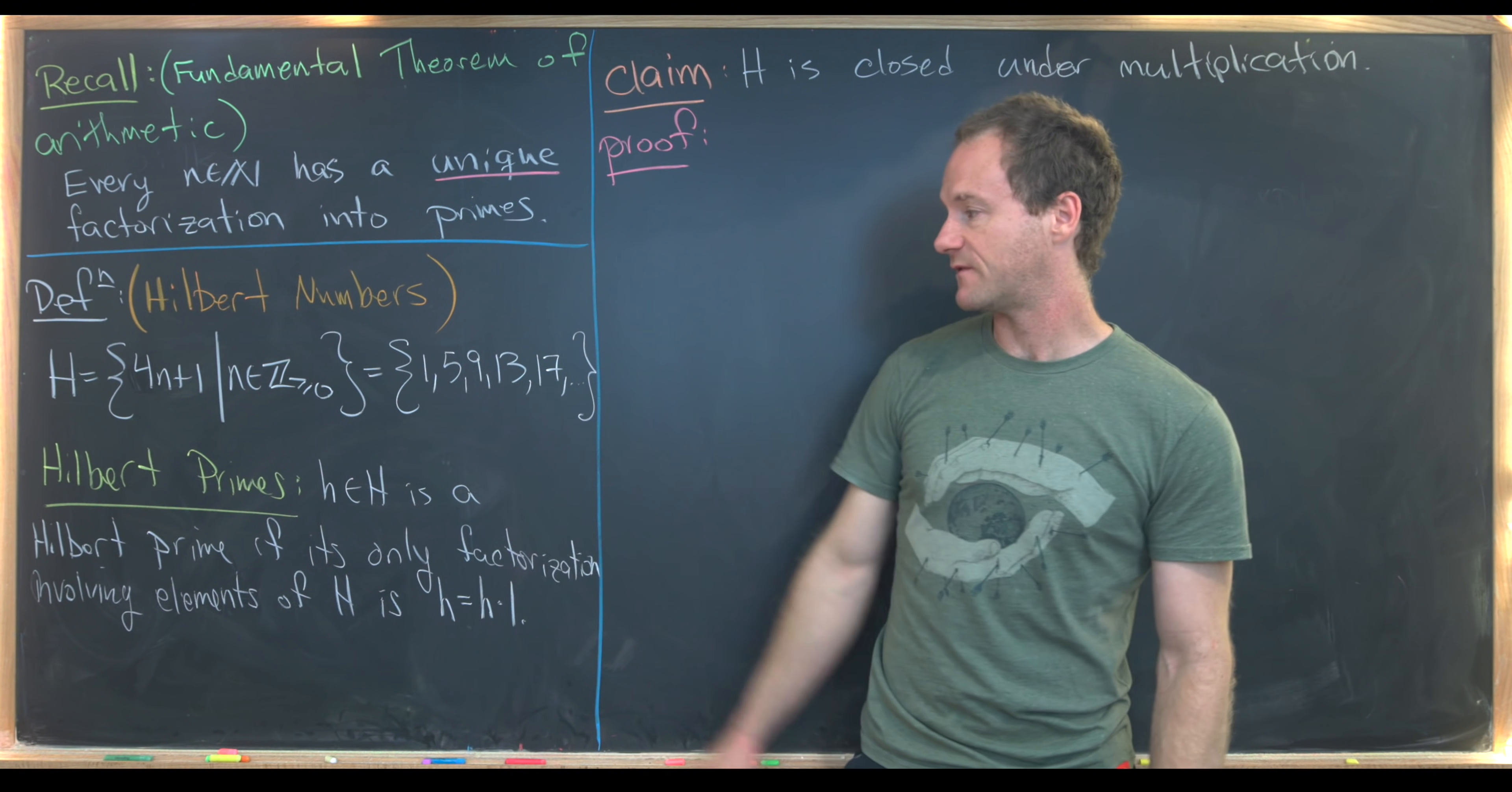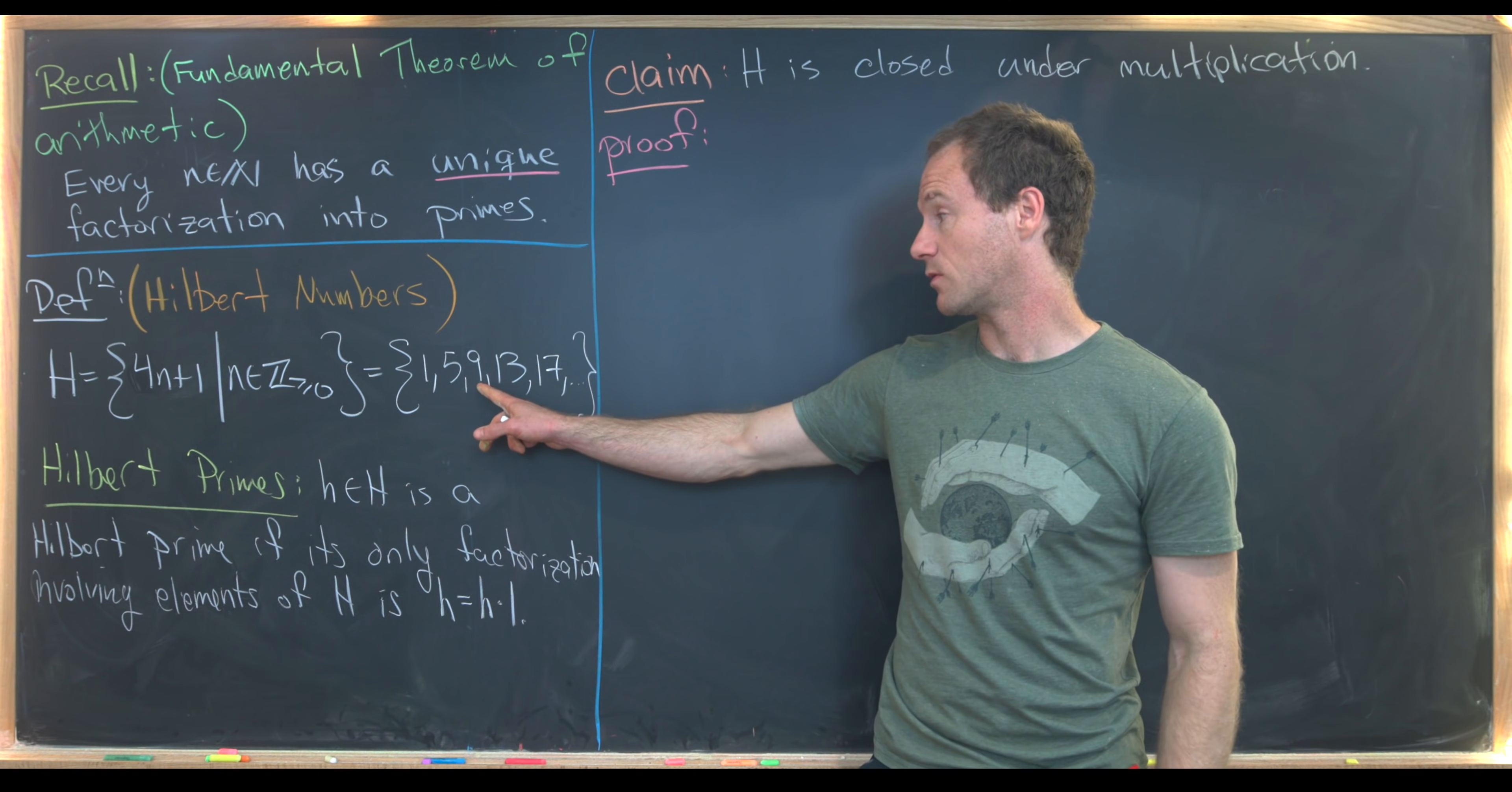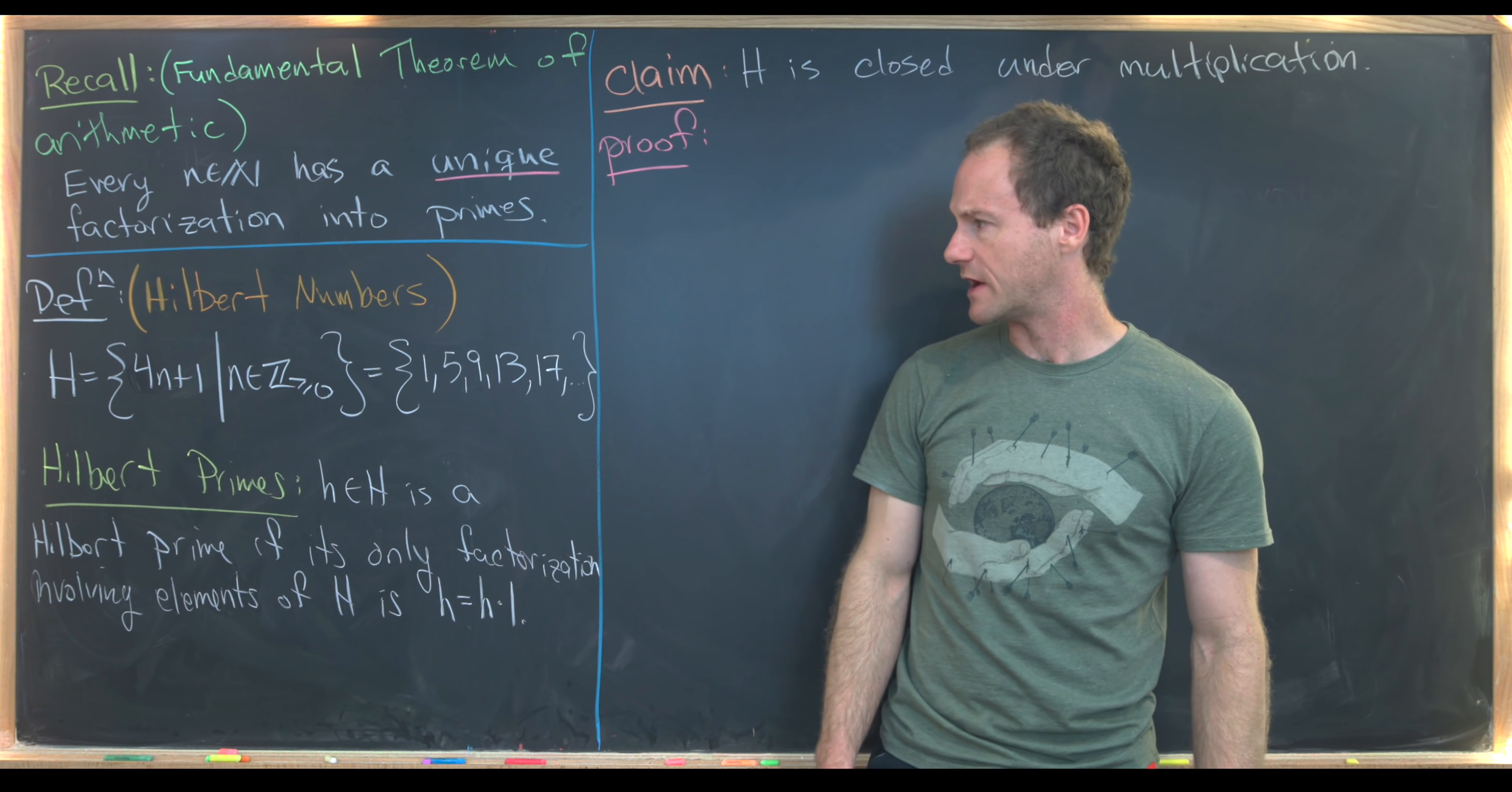Next we want to define something called a Hilbert prime. H in H is called a Hilbert prime if it only factors in H as H times 1. I want to notice that 9 is a Hilbert prime. Notice 9 cannot be rewritten as anything except for 9 times 1 if you use Hilbert numbers. Obviously, if you use regular numbers, it's equal to 3 times 3, but both 3 and 3 are not of the form 4n plus 1.